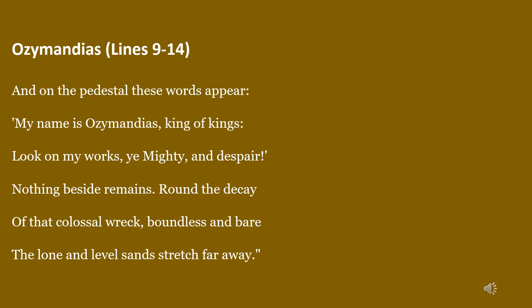We will continue the explanation of the remaining six lines. I will read out the lines: 'And on the pedestal, these words appear: My name is Ozymandias, King of Kings; Look on my works, ye Mighty, and despair!'